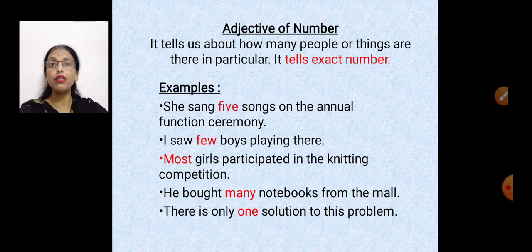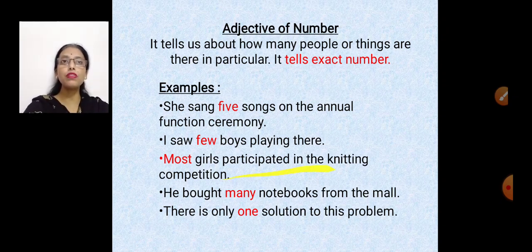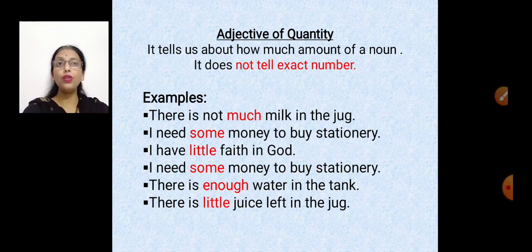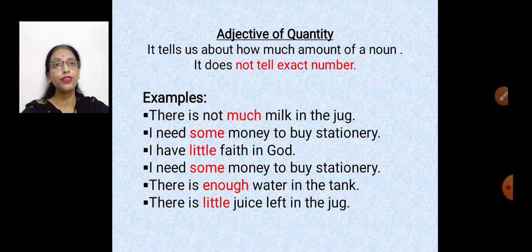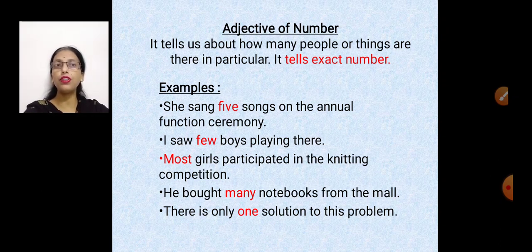Girls are countable, so if we count we can tell the exact number. 'He bought many notebooks' — notebooks are countable. 'There is only one solution to this problem.' Looking back at adjective of quantity: the nouns milk, money, faith, water and juice are all uncountable, so they fall under adjective of quantity. Things we can count — like songs, boys, girls, notebooks, solution — come under adjective of number.